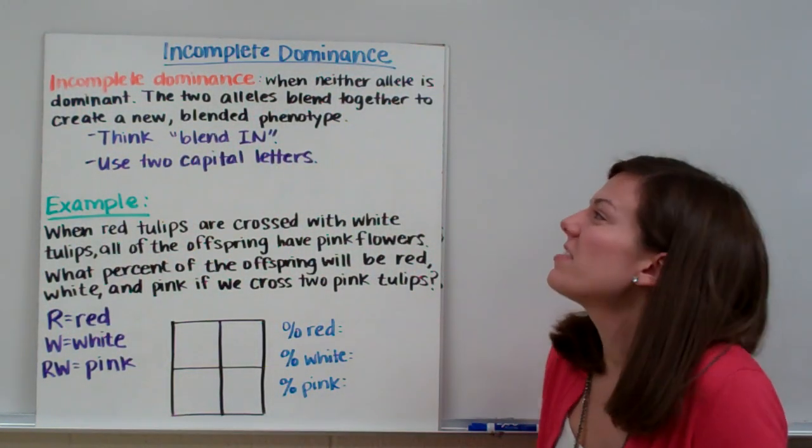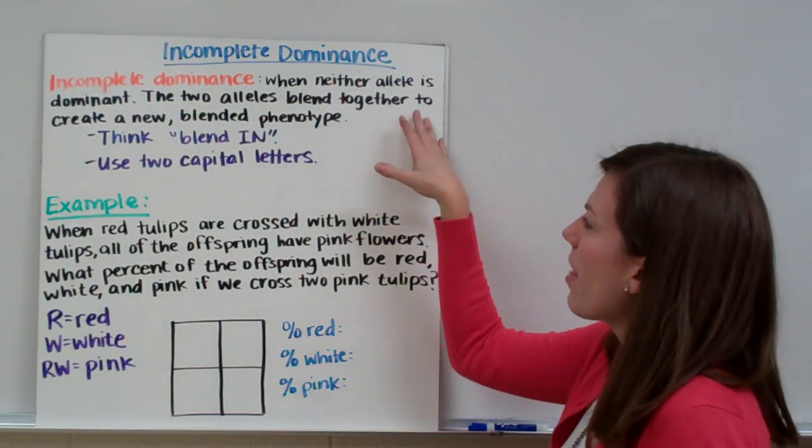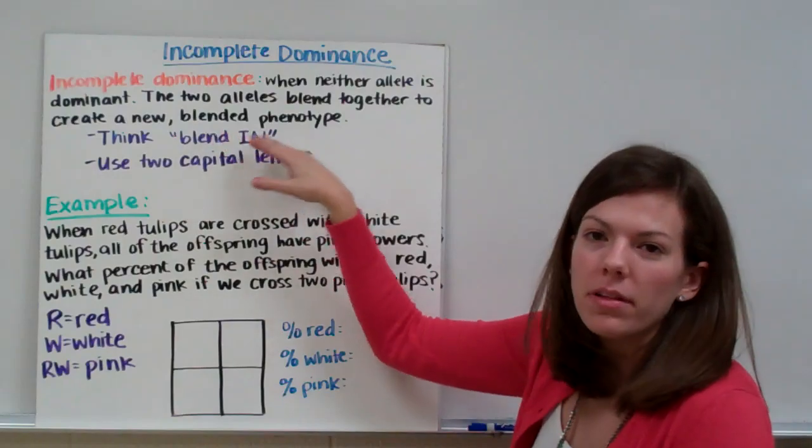Incomplete dominance is when neither allele is dominant. The two alleles blend together to create a new blended phenotype.